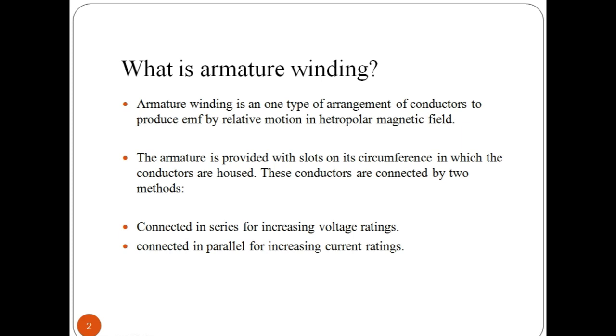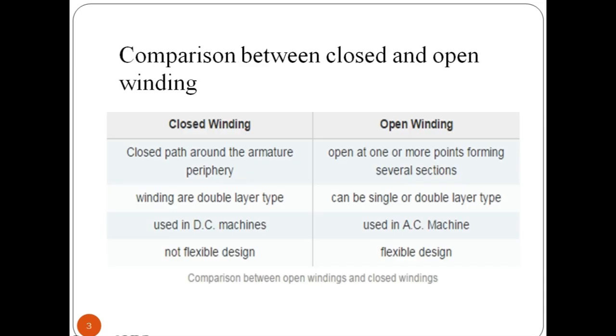The armature is provided with slots on its circumferences in which the conductor are housed. Then, the winding number of the curve is equal to the total number of the counterclockwise turns that the object makes around the origin.